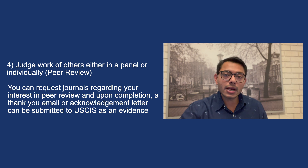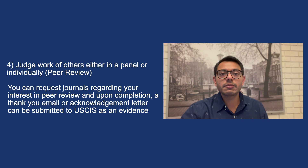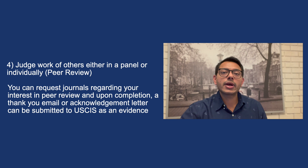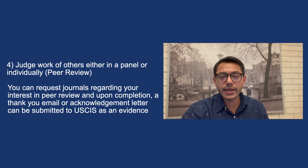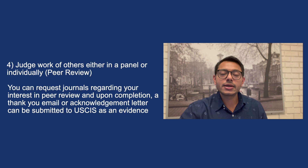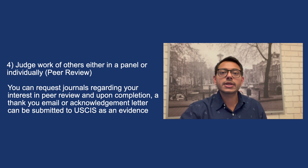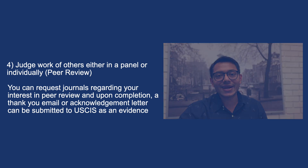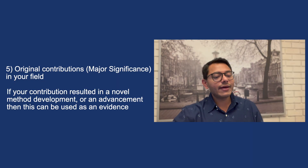The fourth criteria is evidence of you being asked to judge the work of others, either in a panel or individually. This can be achieved if you have been publishing papers in your research field and then request journals that you are interested in peer reviewing. If given a chance to peer review and you complete it successfully, you can ask the editor for a thank-you note or acknowledgement letter, and then use those as evidence to fulfill this criteria.